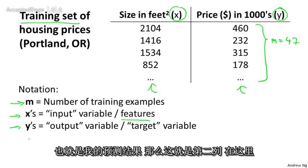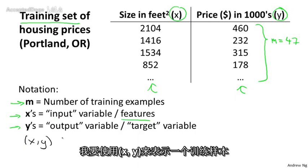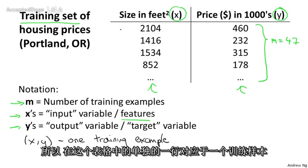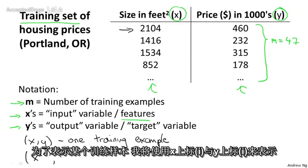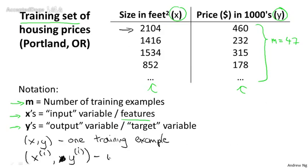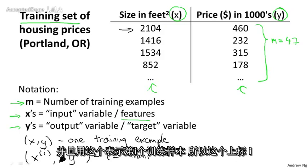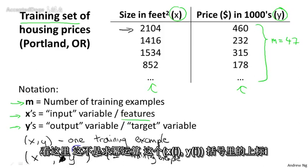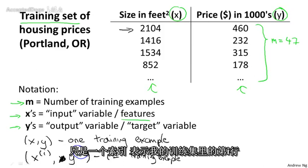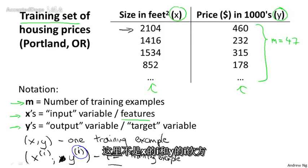I'm going to use (x, y) to denote a single training example — a single row in this table. And to refer to a specific training example, I'm going to use the notation x^(i), y^(i) to refer to the i-th training example. This superscript i is not exponentiation — it's just an index into my training set, referring to the i-th row in this table. So this is not x to the power of i or y to the power of i; instead, x^(i), y^(i) just refers to the i-th row of this table.